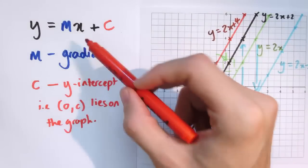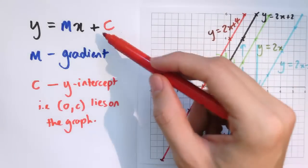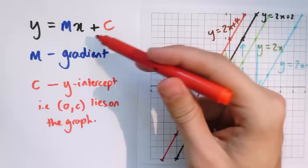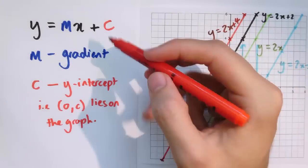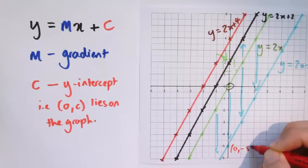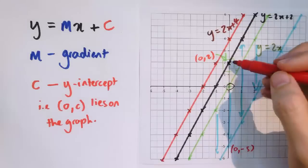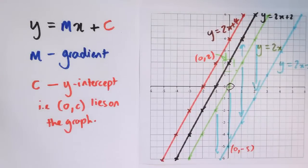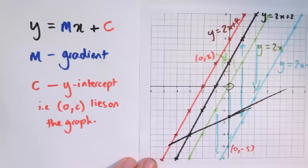In general, if we have a graph of the form y equals mx plus c, m gives us the gradient — here it was 2 — and the plus c (or minus c) gives us the y-axis intercept. That means the point 0, c lies on the graph. And between those two pieces of information — where the line crosses the y-axis and how steep it is — we have all we need to draw the whole straight line graph.